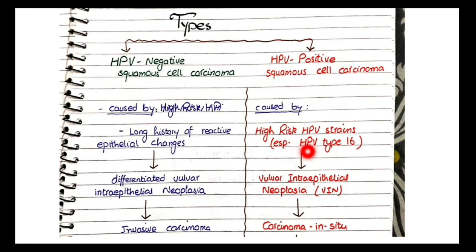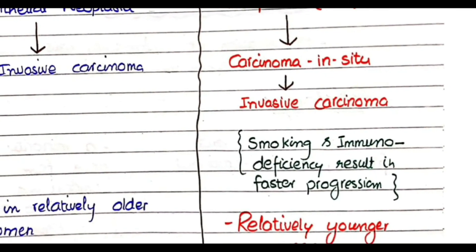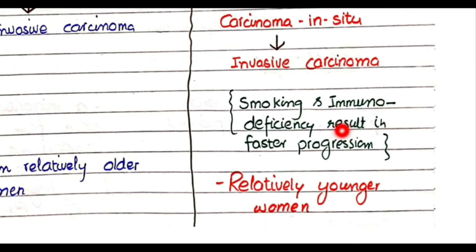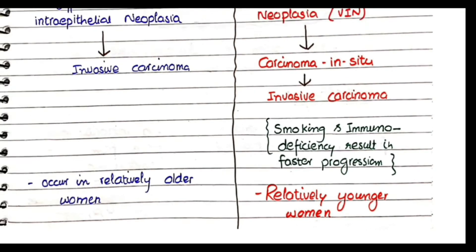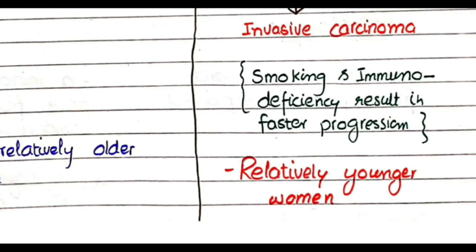The progression starts from infection by HPV 16 and 18, which can transform into vulvar intraepithelial neoplasia (VIN), then into carcinoma in situ, and ultimately into invasive carcinoma. Importantly, smoking and immunodeficiency result in faster progression from high-risk HPV infection to invasive carcinoma. HPV-positive squamous cell carcinoma usually occurs in relatively younger women.